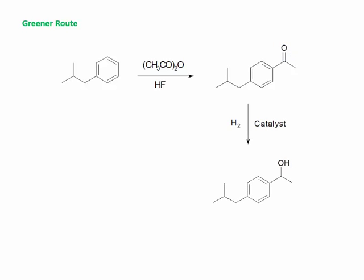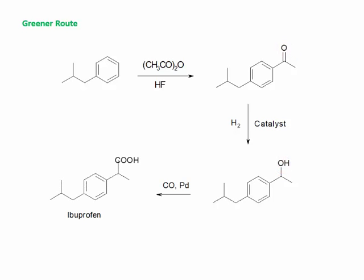It is then treated with hydrogen in the presence of a catalyst, and the corresponding ketone is converted into an alcohol group. Oxidation is then carried out in the presence of carbon monoxide and palladium as a catalyst to convert it into the corresponding acid — the ibuprofen product. In the greener route, the same ibuprofen is formed in only three steps, so the yield is maximum and most of the reactants are converted into product.